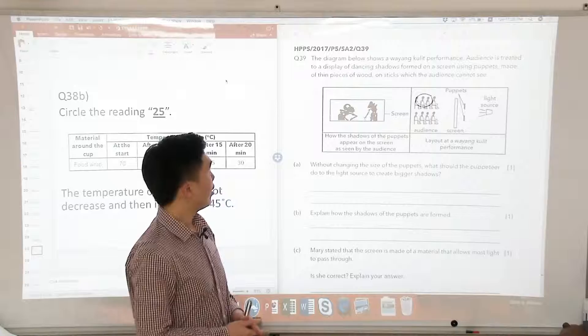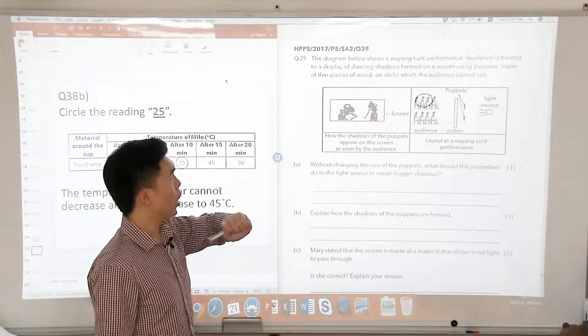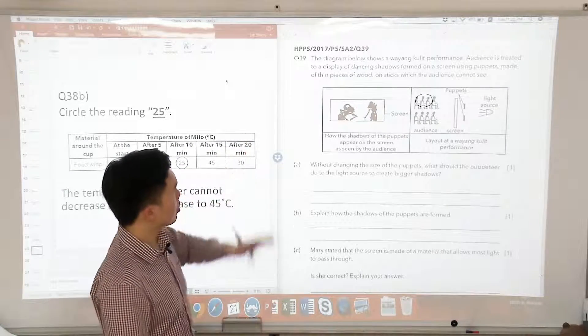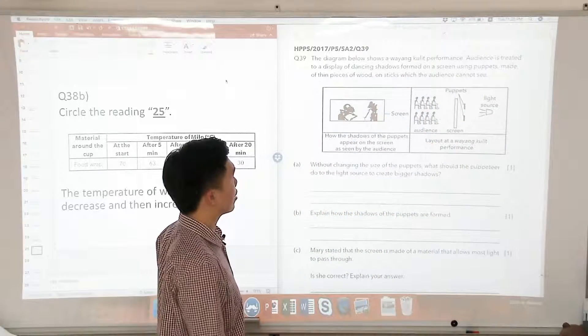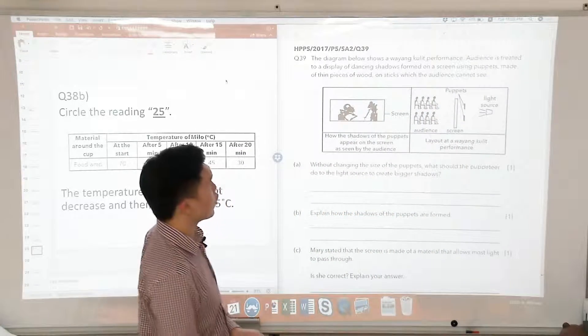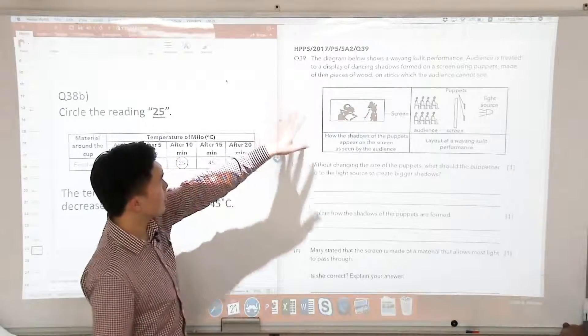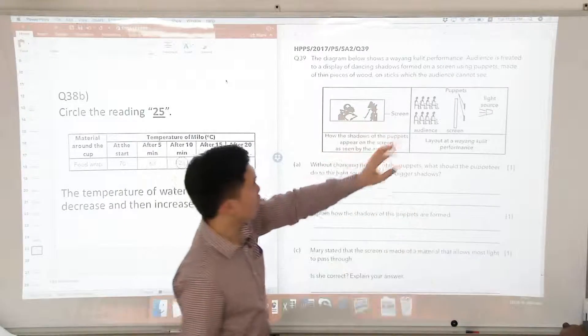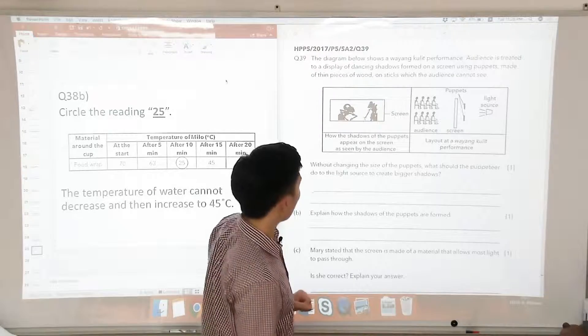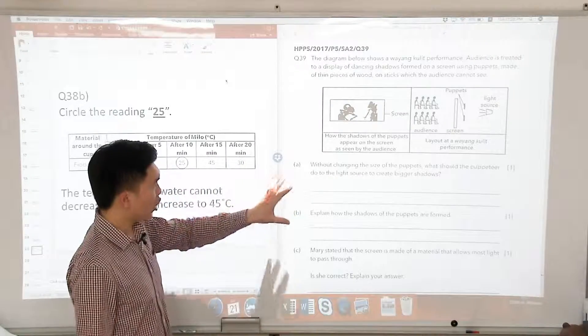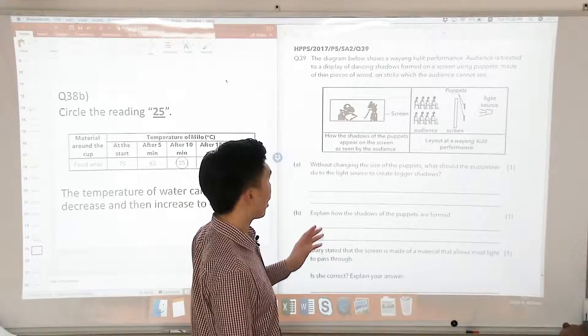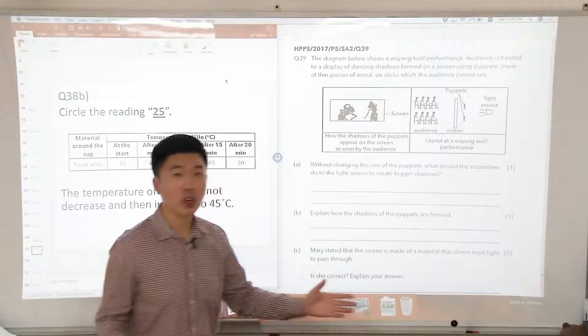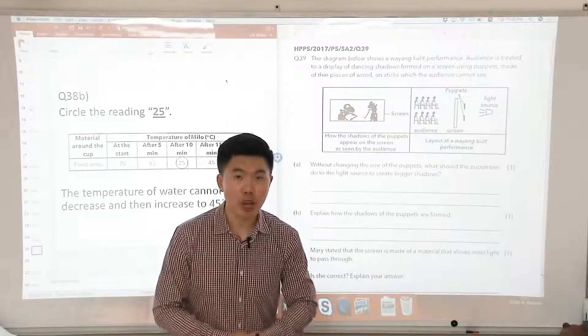Moving on to question 39, the diagram below shows a Wayang Kulit performance. Audiences are treated to a display of dancing shadows formed on a screen using puppets made of thin pieces of wood on sticks which the audience cannot see. What happens here is that without changing the size of the puppets, what should the puppeteer do to the light source to create larger shadows?